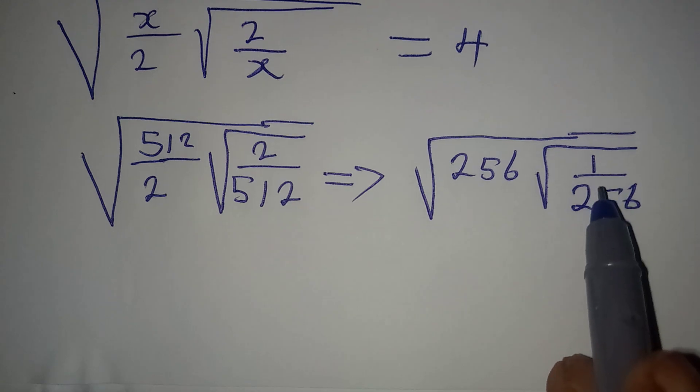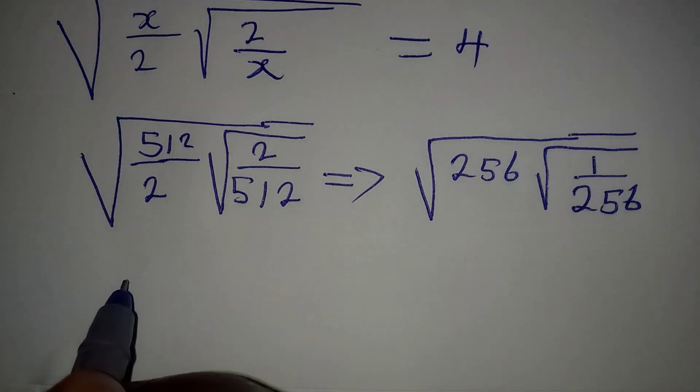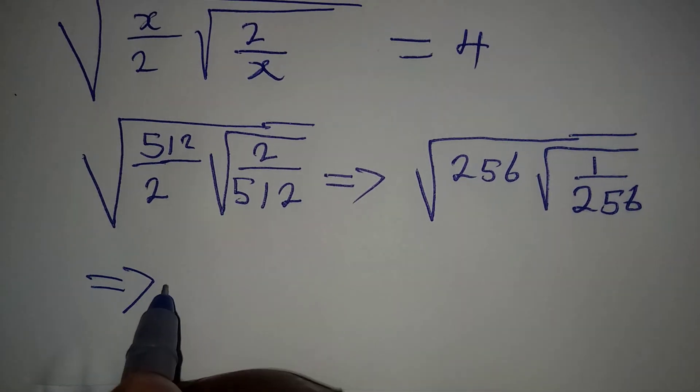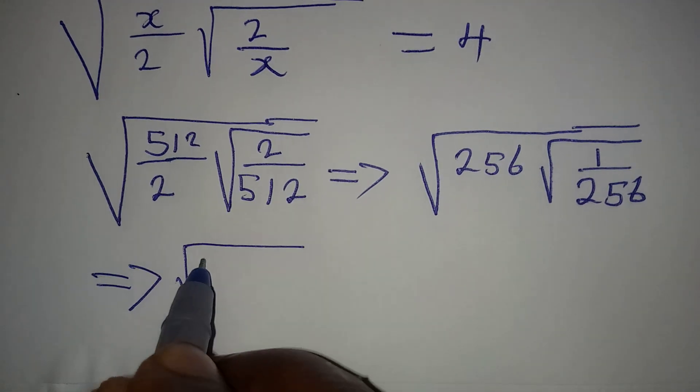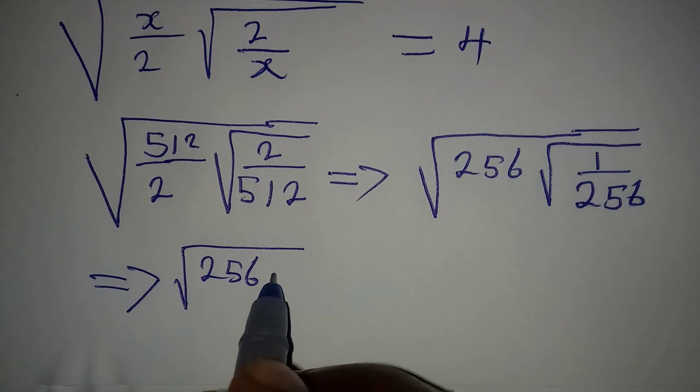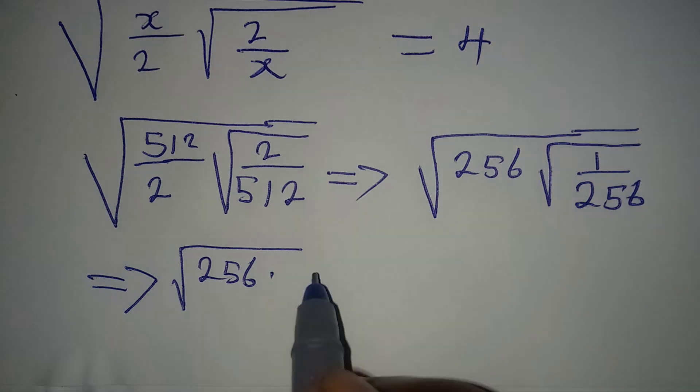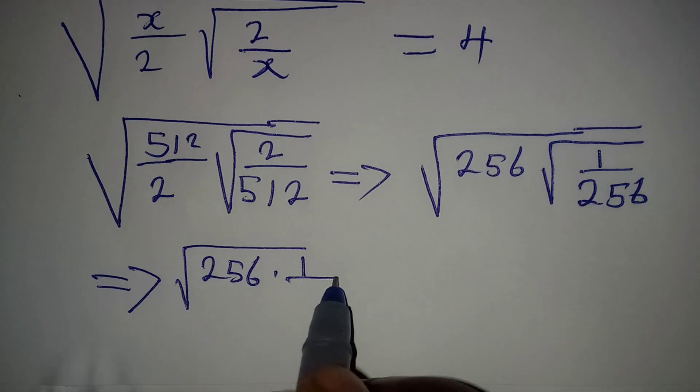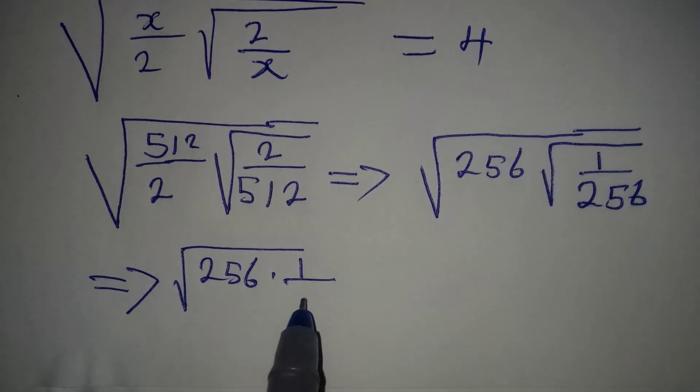Now let's continue. Do not find the square root of this yet. You'll find the square root of the inner one, right? So this implies that we have square root of 256 multiplied by square root of 1 is 1, and then square root of 256 is 16.